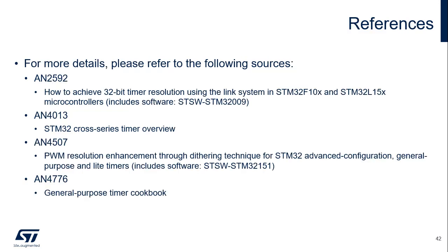Three application notes complement the timer sections in the reference manual. AN2592 gives a practical implementation of a 32-bit timer made of two synchronized 16-bit timers. AN4013 provides a more detailed overview of all timer features and available firmware examples. AN4507 presents an implementation of PWM resolution enhancement by means of dithering techniques. AN4776 starts with reminders on timer operating principles and contains a collection of examples for standard timer use cases. All come with software examples.